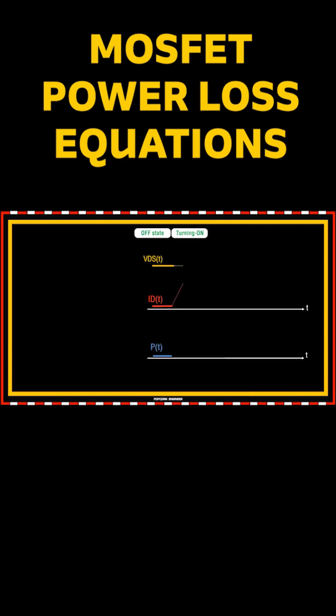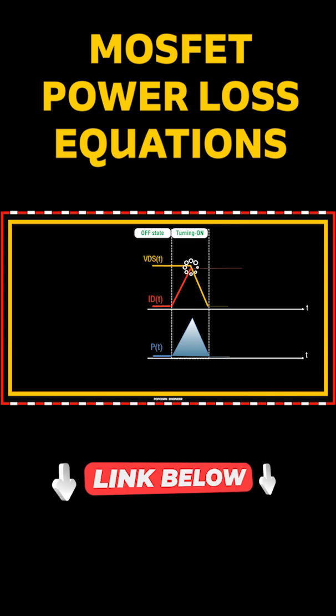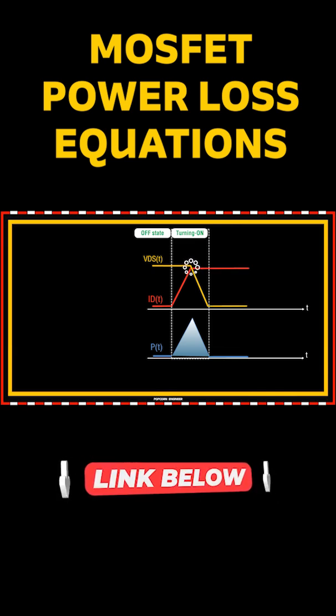VDS starts to fall once the current reaches its full value and falls to nearly zero. During this transition, power is dissipated as shown here in blue, which creates an energy spike.